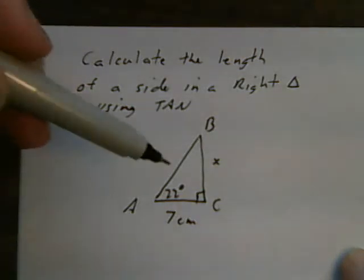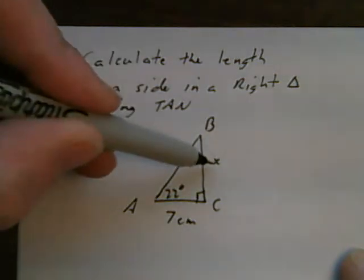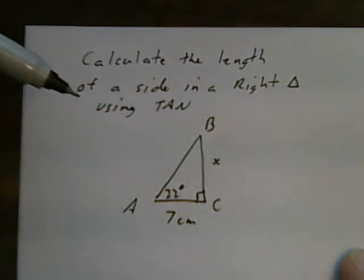The triangle I have here, ABC, has an angle 22 degrees at A, has an unknown side X, and a base of 7 centimeters.